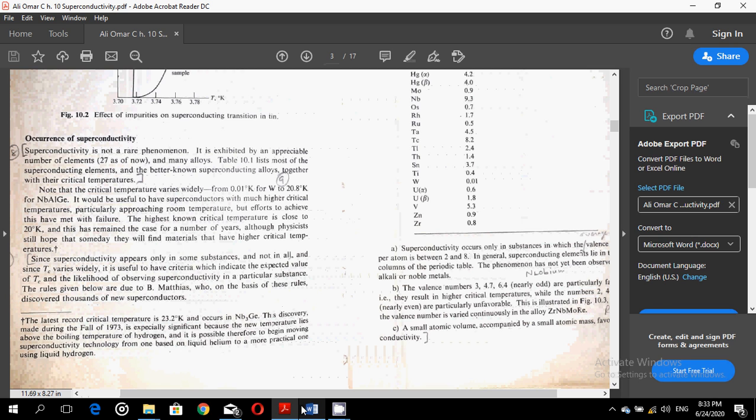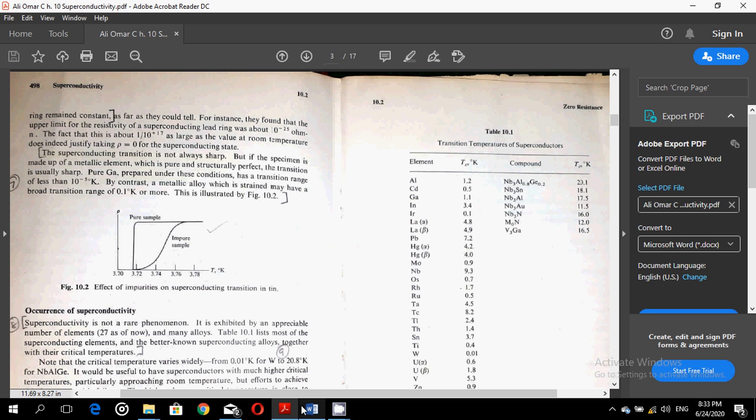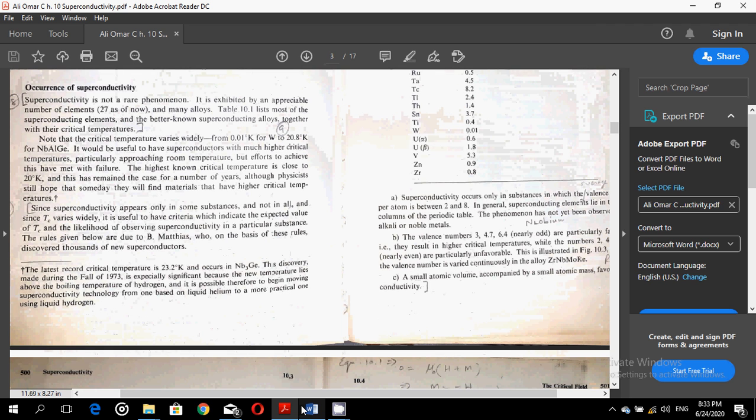Now this is the table over here where you can see both the elemental and the alloyed superconductors. Note that the critical temperature varies widely from 0.01 degrees K for tungsten to 20.8 degrees K for niobium, aluminum, germanium alloy.